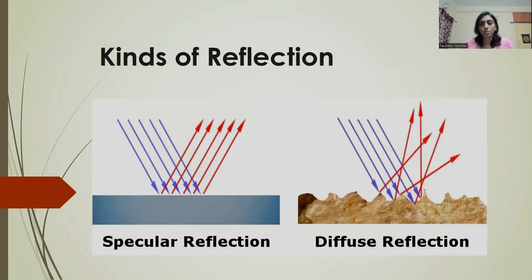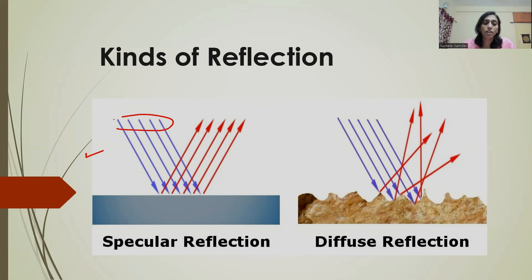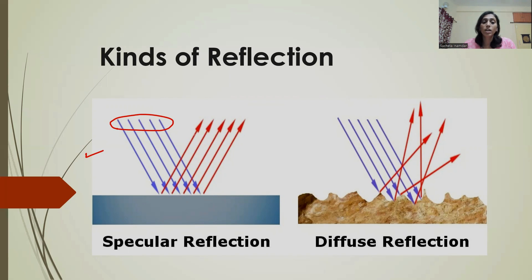There are two kinds of reflection — two types. First is specular or regular reflection. As you can see in the picture, the surface in the first diagram is plain, smooth, and polished. If rays of light which are parallel to each other are incident on a smooth surface, then they are all reflecting and when they go back, they are still remaining parallel because the surface is smooth. This kind of reflection we say is regular reflection or specular reflection.